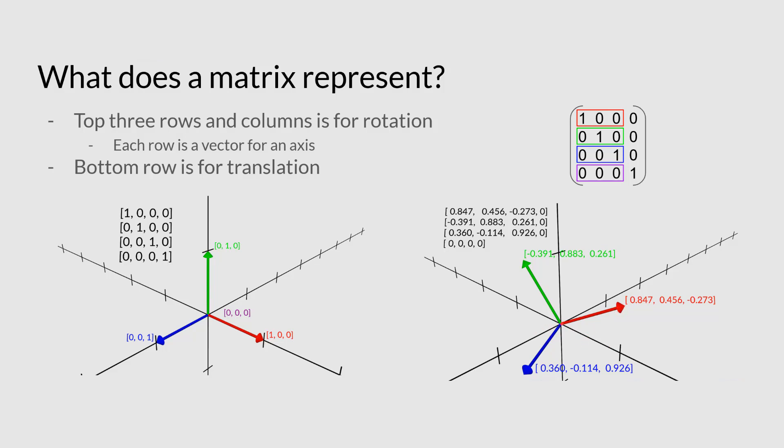And the same for the z-axis, we will go 0.36, we'll go negative 0.1, we'll go almost 1 over to get to that point. So that's basically how we represent rotations in the matrix.